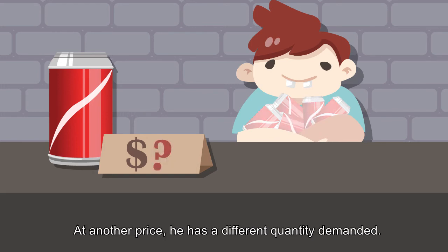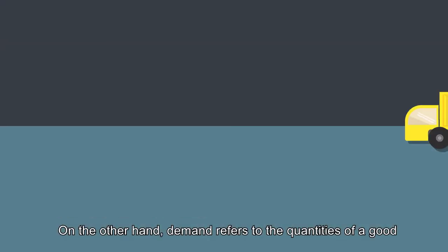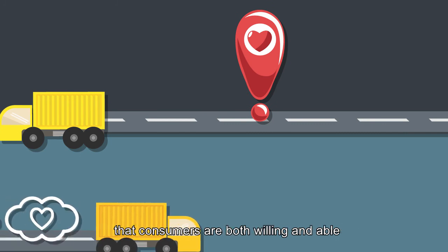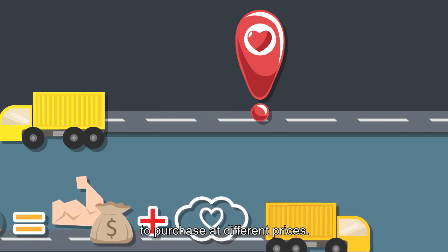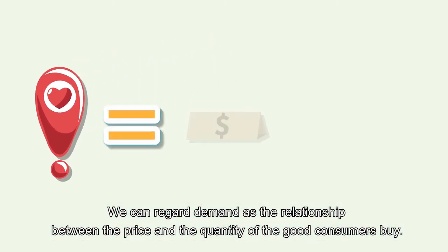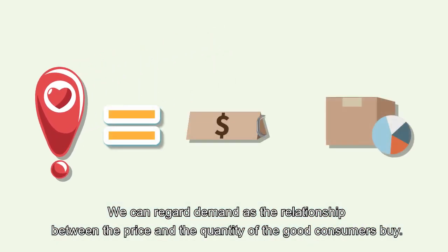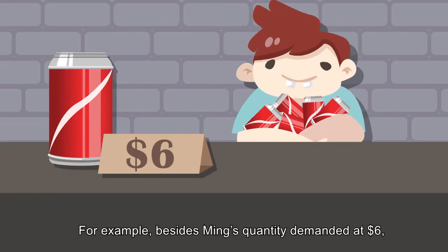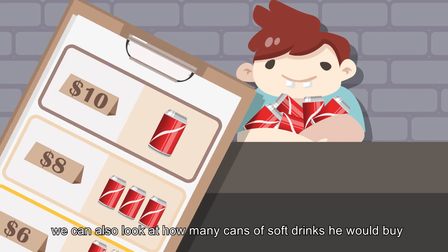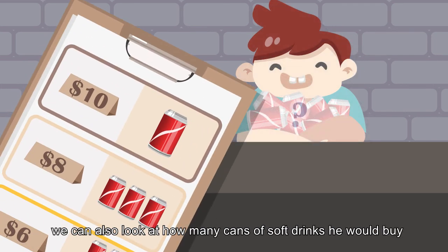At another price, he has a different quantity demanded. On the other hand, demand refers to the quantities of a good that consumers are both willing and able to purchase at different prices. We can regard demand as the relationship between the price and the quantity of the good consumers buy. For example, besides Ming's quantity demanded at $6, we can also look at how many cans of soft drinks he would buy at other prices by referring to the whole demand schedule.